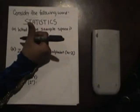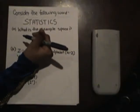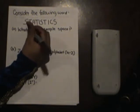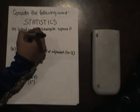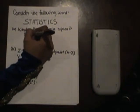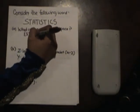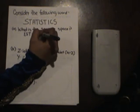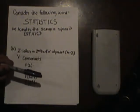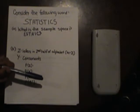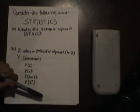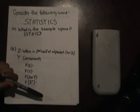Consider the following word: Statistics. What is the sample space? Well, we have an S, a T, an A, an I, and a C. We don't repeat, and I think that's how we solve the sample space since the sample space is the set of all possible outcomes.